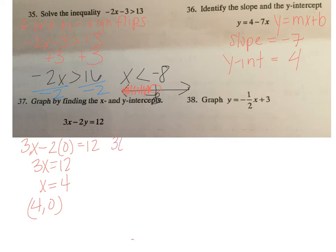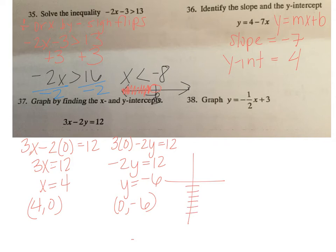And then when I plug in 0 for x to find the y-intercept, I get negative 2y equals 12, and y equals negative 6. And this is the point 0 comma negative 6. So to graph that, I have a point at 0, negative 6. And I have a point at 4, 0. Now I have two points that make a line.